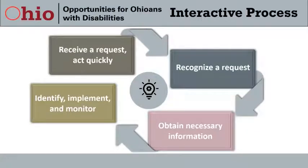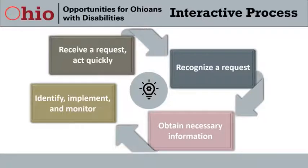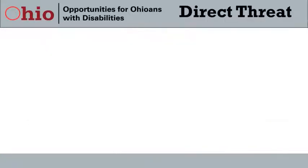For employers who would like more detailed information on the interactive process, there is an on-demand webinar on the employer's page of the OOD website called Navigating the Reasonable Accommodation Process, with the link included in the learner's guide. Now let's talk about health and safety. At the beginning of the pandemic, employers had to make many decisions to try to keep their employees safe, and there are probably still concerns about whether certain situations pose a direct threat to health.